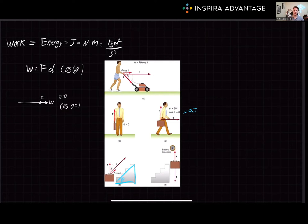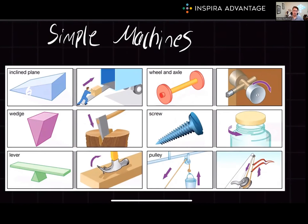Now let's shift gears into simple machines. Simple machines are devices that can be used to change the direction or magnitude of a force to make tasks easier. There are six classical simple machines: the lever, the pulley, the wheel and axle, the inclined plane, the wedge, and the screw.